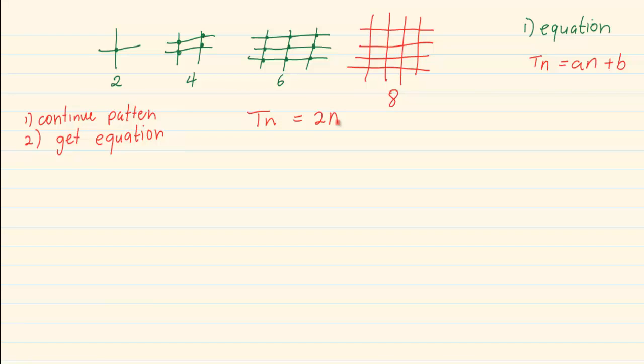And because if we were to go in multiples of 2, 2, 4, 6, 8, you will see there is no adjustment between the multiple and the number pattern. So it is simply 2n plus 0 or you can write it as Tn equals 2n.